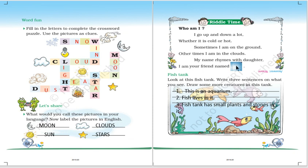Now this is a riddle time and very important riddle because it relates to one more important liquid which we require daily in our life. I go up and down a lot whether it is cold or hot. Sometimes I am on the ground, other times I am in the clouds. My name rhymes with daughter. I am your friend named water.